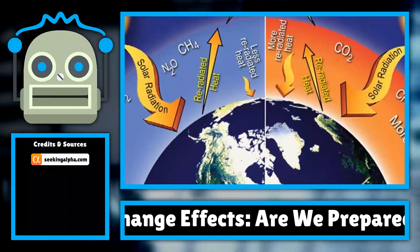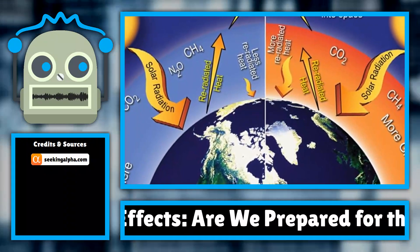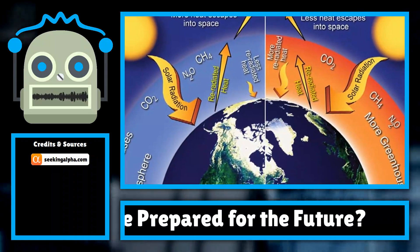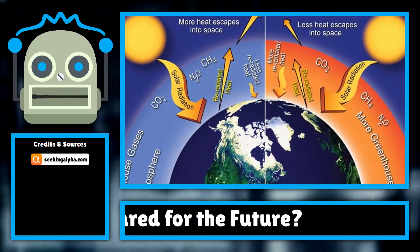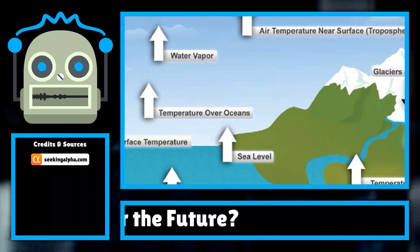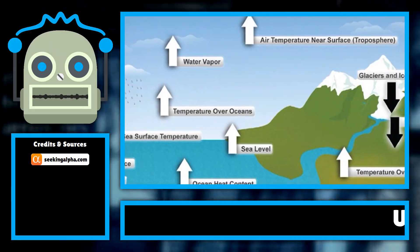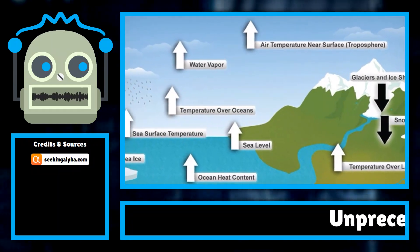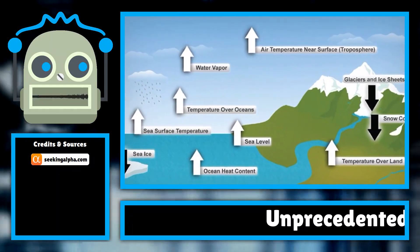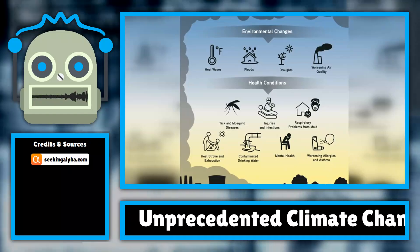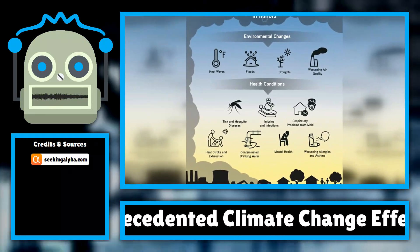One of the most striking examples of climate change's impact is the melting of polar ice caps. Researchers have observed a significant decrease in ice mass in both the Arctic and Antarctic regions, leading to rising sea levels that threaten coastal cities worldwide. Areas such as Miami, New Orleans, and New York City are at risk of severe flooding, prompting local governments to invest in infrastructure improvements and disaster preparedness plans.